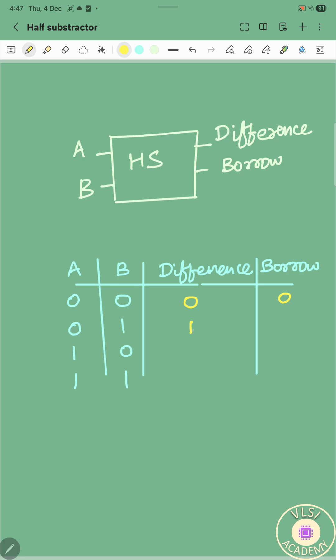When A is 0 and B is 1, at that time A minus B means difference will be 1 and borrow will also go for 1. When A is 1, B is 0, at that time A minus B will give you difference as 1 but borrow will be 0.